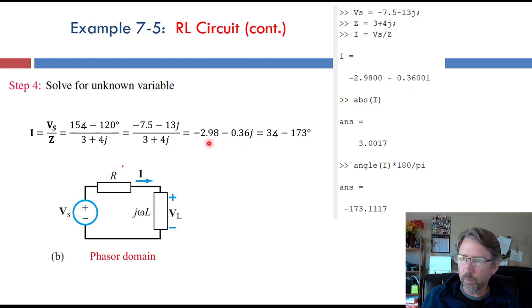again, in rectangular form, because that's the natural complex number form that MATLAB likes. And if we want to change that to polar form, we can use the ABS function in MATLAB to get the amplitude or magnitude. It's about 3 amps. And the phase angle,